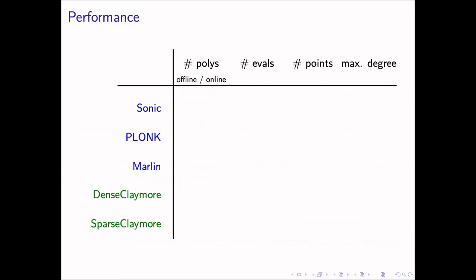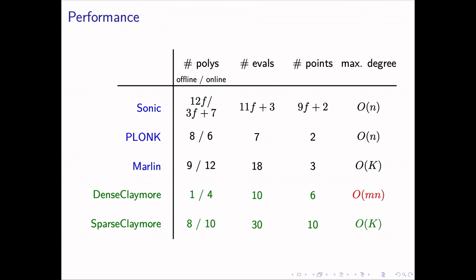Finally, we analyze the performance of Claymore compared to the state-of-the-art. The metrics we consider include the number of polynomials involved in the protocol, either sent by the prover online or pre-processed offline, the number of evaluation queries, the number of distinct evaluation points, and the maximum polynomial degree. All these metrics affect the performance of the compiled SNARK. Here are the results. The F here is the maximum fan-in of addition gates. Typically, it could be 2 or 3. In the protocol design, we focused on optimizing the number of polynomial oracles. We have partially succeeded in this respect. Dense Claymore has the advantage in the number of polynomials compared to the rest at the sacrifice of maximum degree, while sparse Claymore reduces the maximum degree of dense Claymore at the cost of more polynomials and evaluation queries.